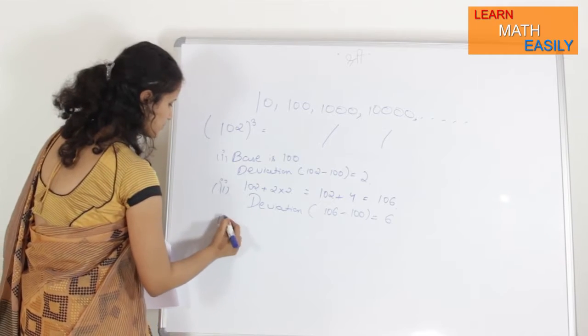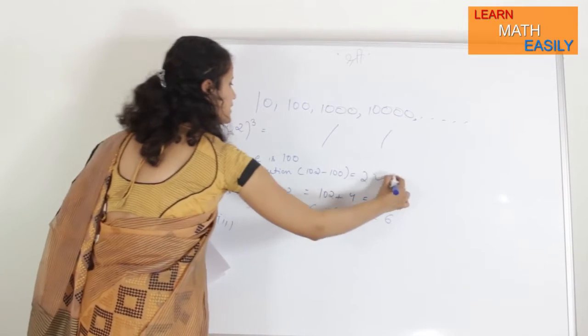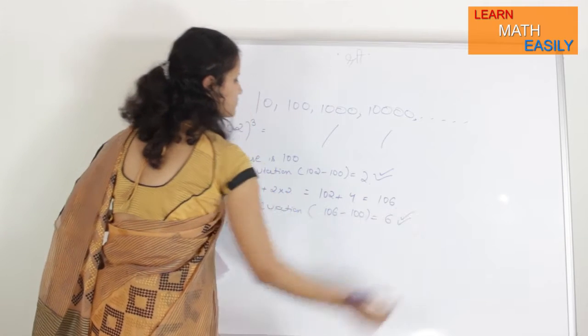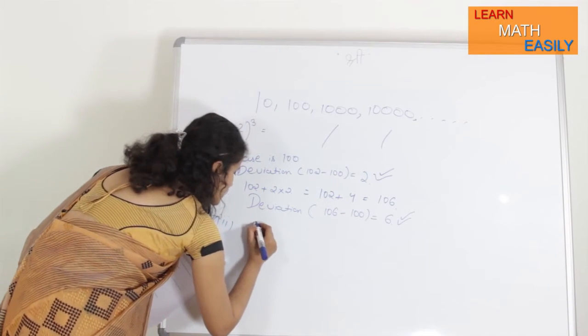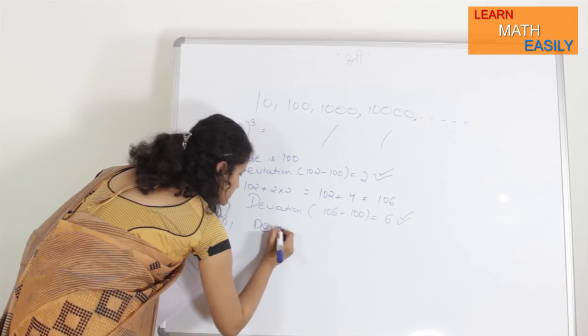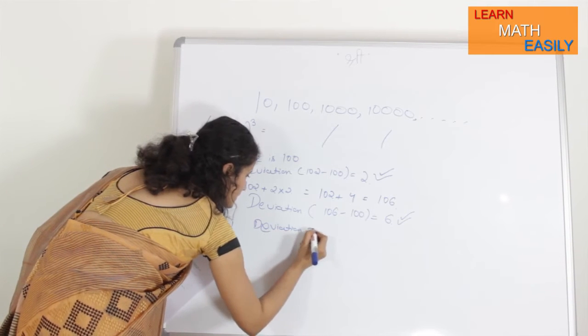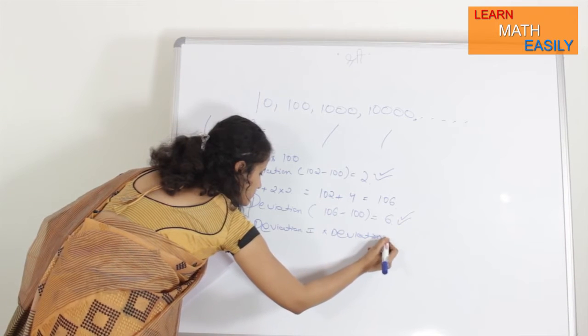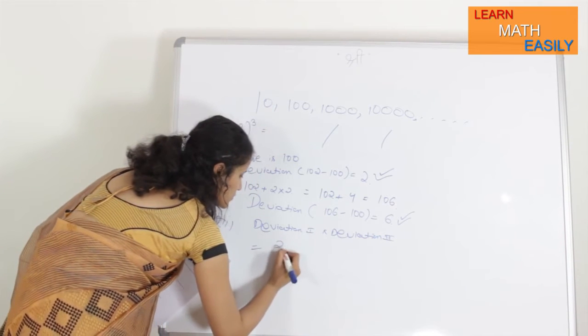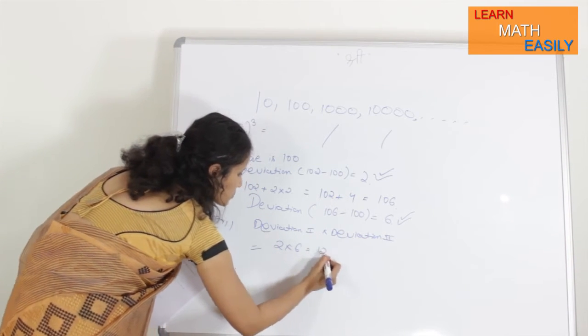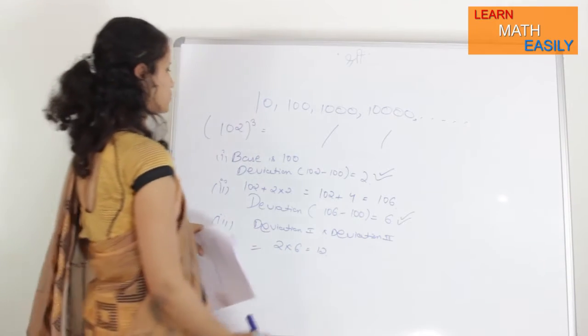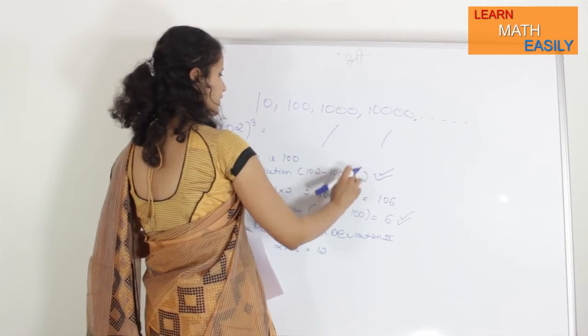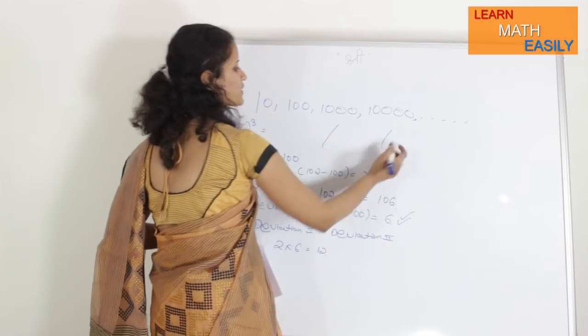Now, in third step, what we will do is, we will multiply both the deviations, that is, deviation first, into deviation second. So, that is equal to 2 into 6, which is equal to 12.